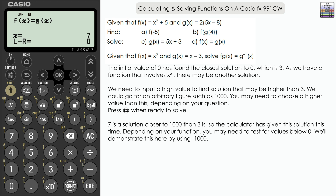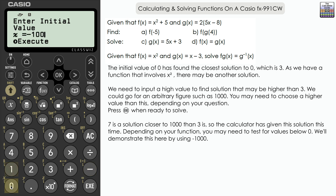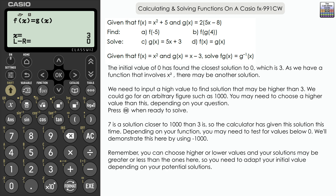To verify there are no further solutions, go back to the initial value screen and input negative 1000. Press Execute again — the result is x equals 3, confirming there are no solutions below 3. With zero we got 3, so we can be confident we have both solutions. Be careful if you suspect very large or very small solutions, but for most questions a reasonably large or low starting value will find any additional solutions.